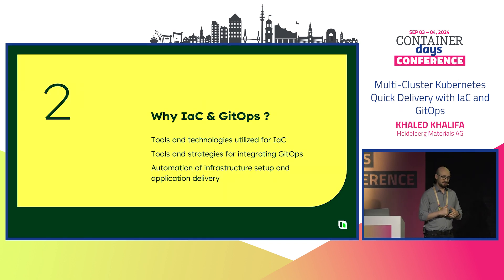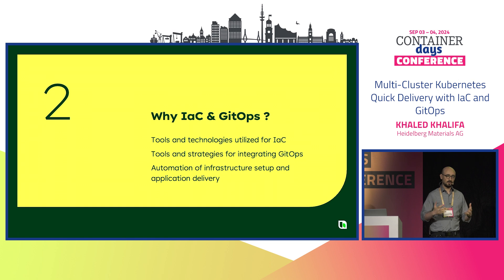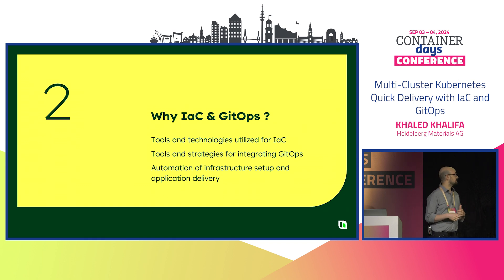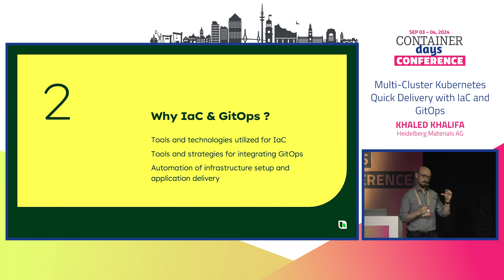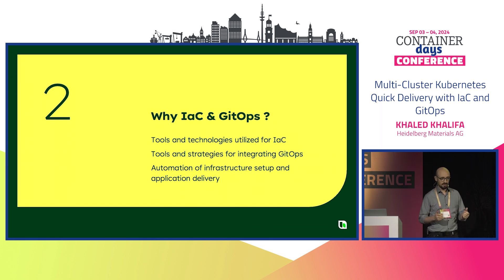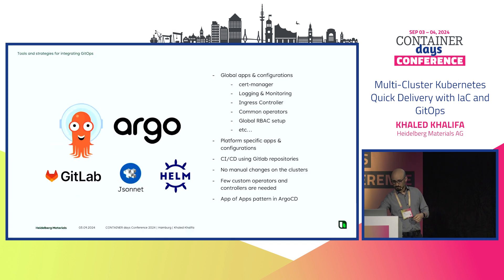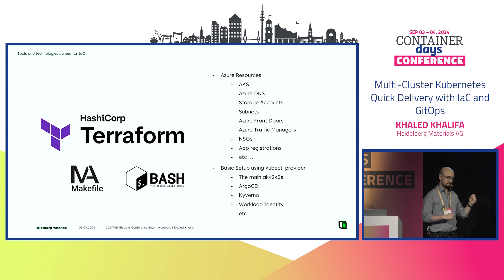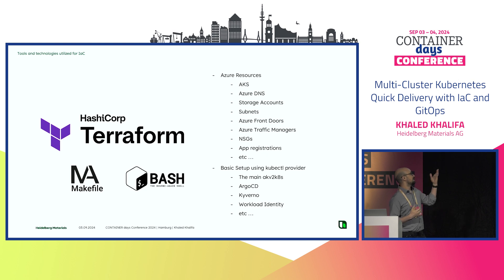So the question is: why Infrastructure as Code and GitHub? Automation was very important to be able to scale. We combined IaC and GitOps to deliver ready platforms for hosting applications. For the Infrastructure as Code part, we use Terraform with Makefiles, Bash scripts, and Python. That's the most important tooling.